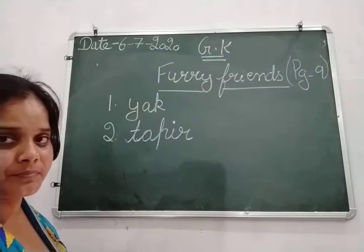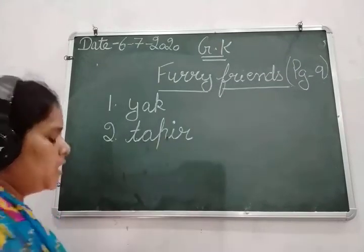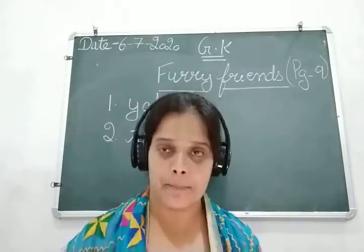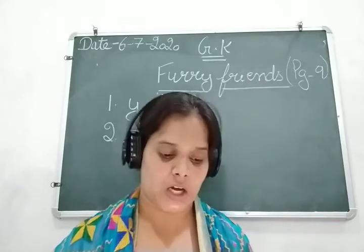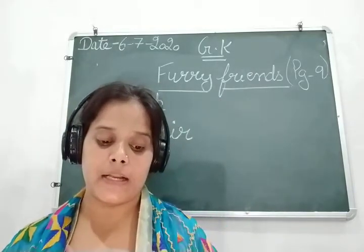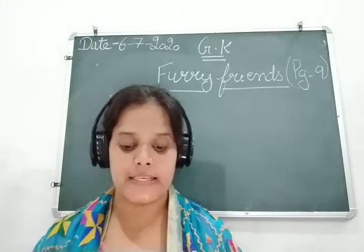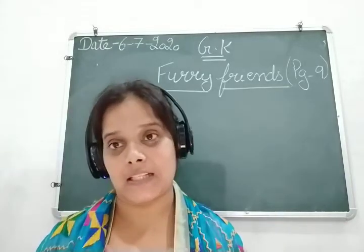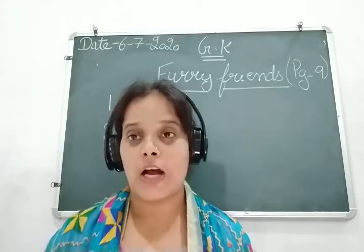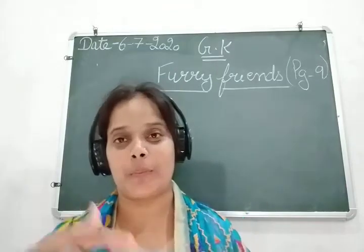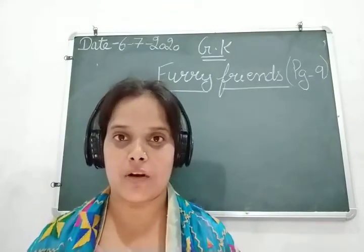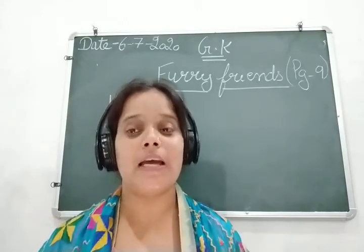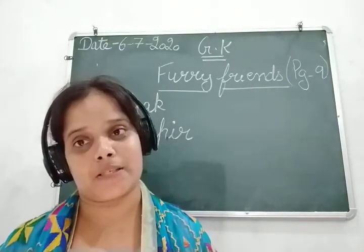Now moving next to the third one. It is an acrobatic mammal found in Southeast Asia, with a human-like build and known for having no tail. This animal looks like a human. We humans belong to the family of apes, and this animal also belongs to the family of apes.